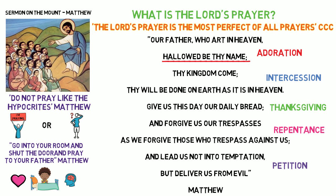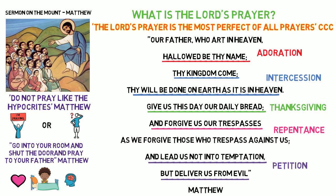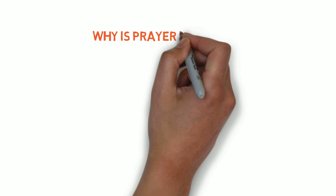It includes Adoration when it says 'Hallowed be thy name' — we are adoring how great the Lord's name is. It includes Intercession when it says 'Thy will be done on earth as it is in heaven' — we are praying for the world and for the return of Christ to restore perfection. Thanksgiving is shown when we pray for our daily bread, acknowledging that everything we need to live this day is a gift from God. Repentance is when we ask God to forgive our wrongdoings, and finally we see Petition when we ask the Lord to help us to turn away from sin. This is why the Catechism regards the Lord's Prayer as the most perfect.